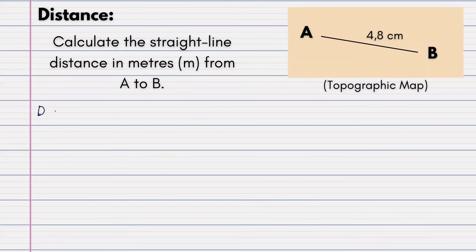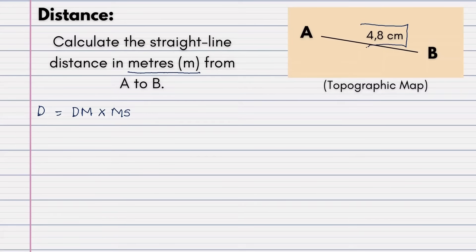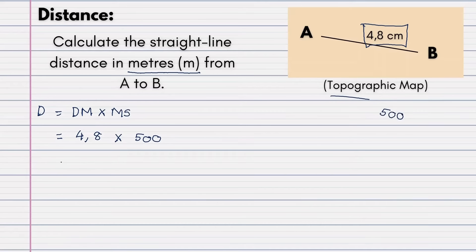The formula for distance is: map distance (dm) multiplied by the map scale. Since this is a topographic map, the scale is 1:50,000. They want the answer in meters, so read the question very carefully. Step 1: measure the line — it measured 4.8 centimeters. Step 2: place this into the formula — 4.8 centimeters times 500, because for a topographic map in meters we multiply by 500. Step 3: write the answer with the correct unit — this gives us 2,400 meters. Always remember to add the unit.